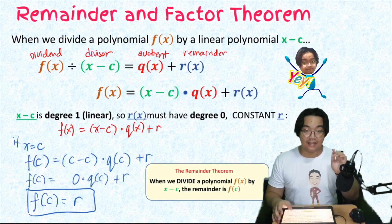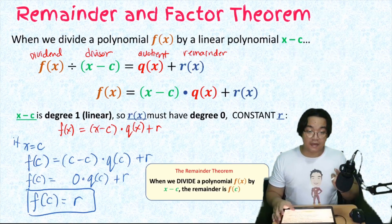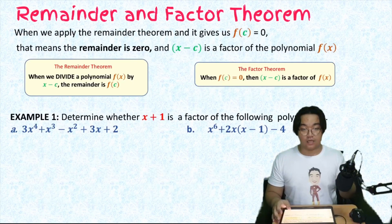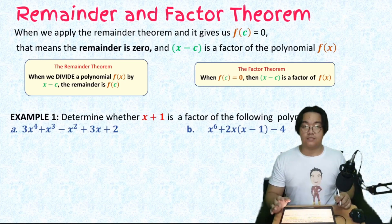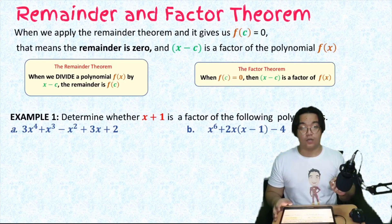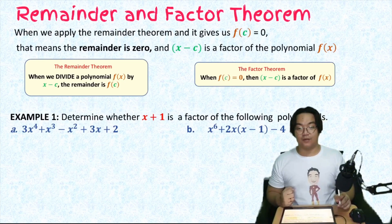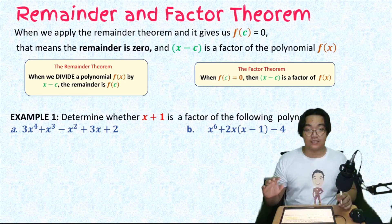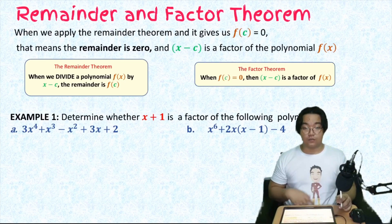The Factor Theorem comes from the Remainder Theorem. When we apply the remainder theorem and it gives us f(c) = 0, that means the remainder is zero and (x minus c) is a factor of the polynomial f(x). So we can skip the process of dividing just to get the remainder.